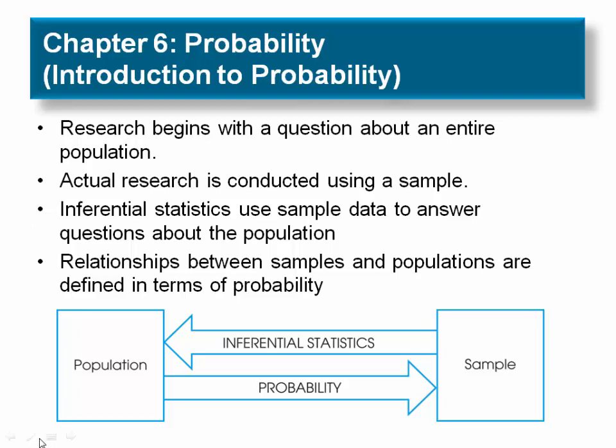When we do inferential statistics, we rely on this connection when we use sample data as the basis for making conclusions about populations. The goal of inferential statistics is to begin with a sample and then answer general questions about populations. We will reach this goal in a two-stage process. In the first stage, we develop probability as a bridge from populations to samples, identifying the types of samples that probably would be obtained from a specific population.